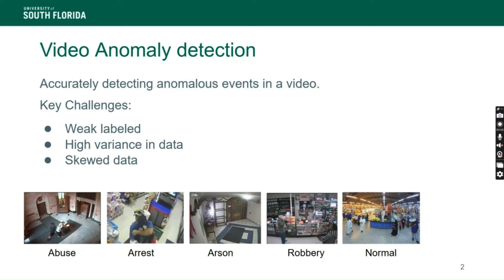The data is weakly labeled, so we do not have specific labels for each frame. Although we do know which videos may have an anomaly, we don't know where the anomaly is localized — that is the core challenge we need to solve.